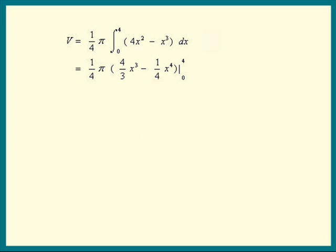Substitute the 4 in. We get 1 fourth π times 4 over 3 times 4 cubed minus 1 fourth, 4 to the fourth. Notice I'm not multiplying anything else because I don't want to use a calculator. A 4 cubed factors out. We get 4 to the fourth power over 4 times π times 1 third minus 1 fourth. The 4 goes into the 4 to the fourth power. We got 4 cubed and that's 64.